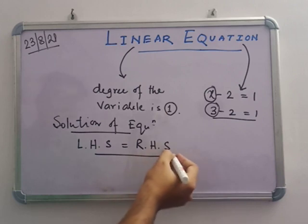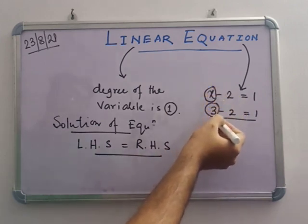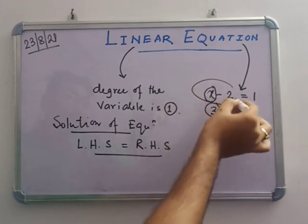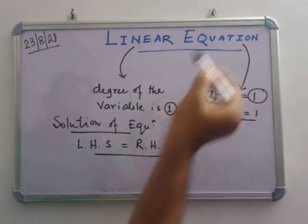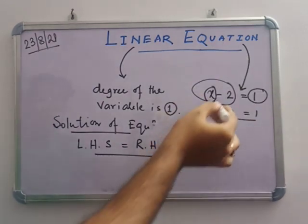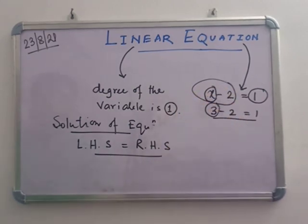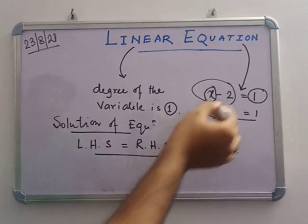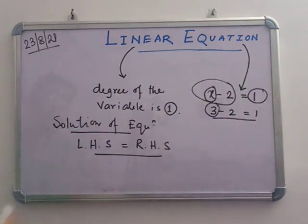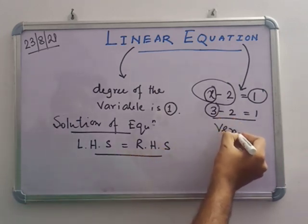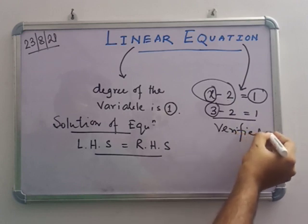If we put x equals to 3 on the left hand side, we get 3 minus 2 equals to 1. And the right hand side already has 1. That means LHS equals to RHS. So we can say that this equation is verified.